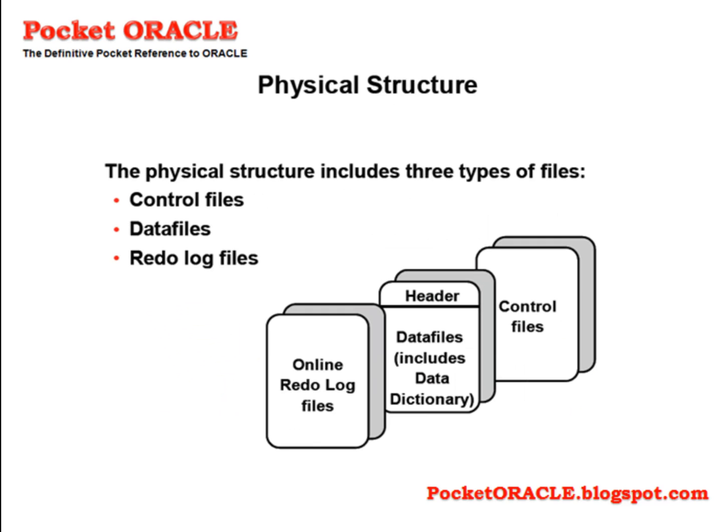Every database has one control file, but you can have up to ten copies of it. The control file is small but vital. It contains pointers to the rest of the database — the locations of the online redo log files and of the data files. It also stores information required to maintain database integrity, including various critical sequence numbers and timestamps. The control file will usually be no more than a few megabytes big, but you can't survive without it.